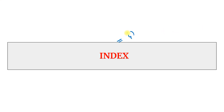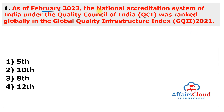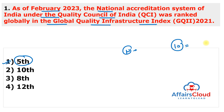Moving to the index section. First question: As of February 2023, the National Accreditation System of India under the Quality Council of India was ranked globally in the Global Quality Infrastructure Index 2021. The answer is fifth globally. India's overall quality infrastructure system ranking continues to be in the top 10, unchanged from the 2020 ranking where India was at 10th position. India's total score is 0.932, down from 0.956 in 2020, but India's accreditation rank improved from 7th to 5th.